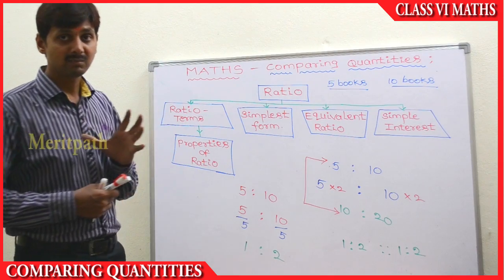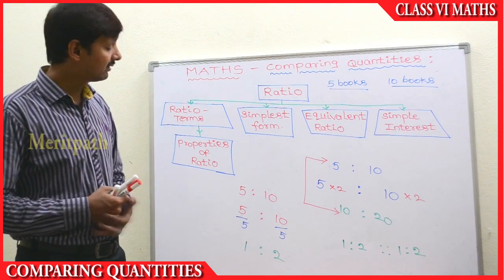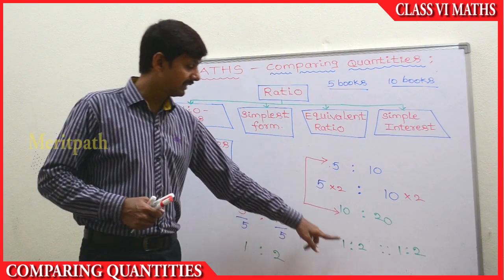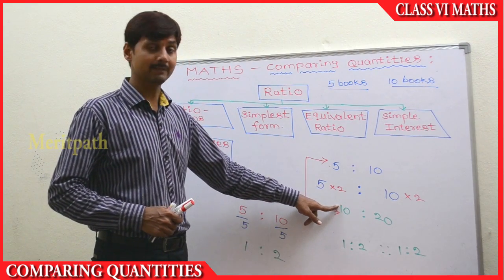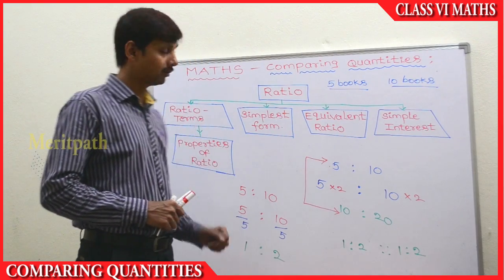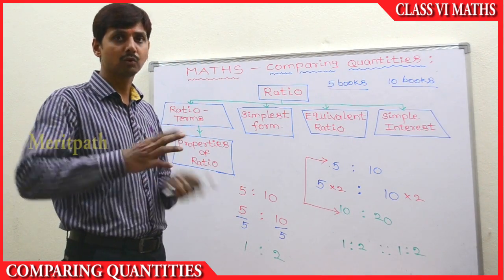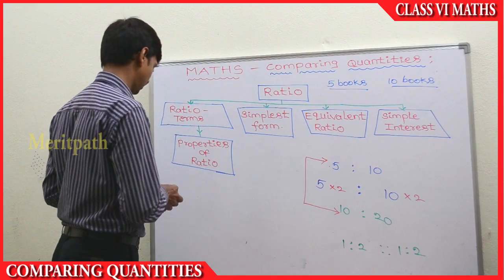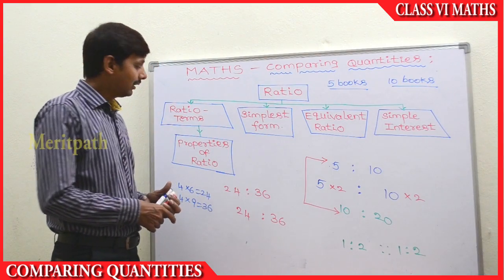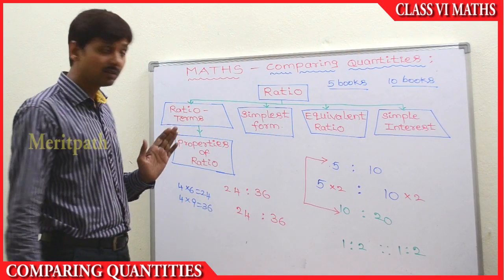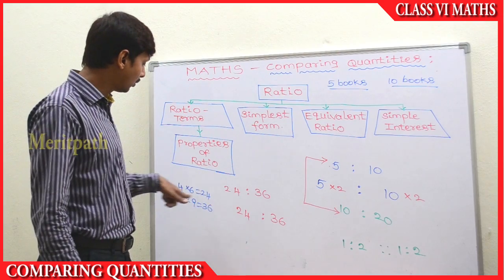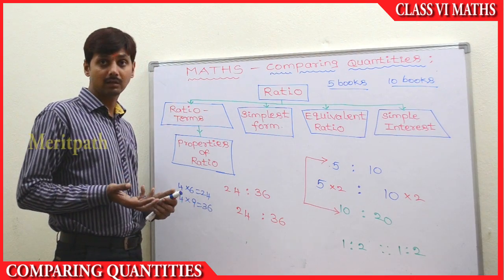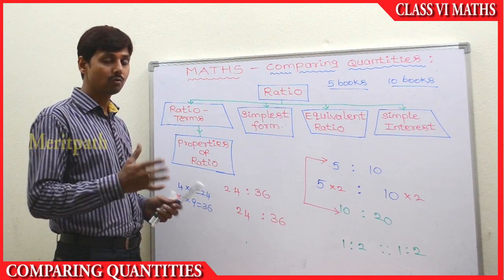The next concept is the simplest form of a ratio. We have taken five is to ten — cancel with the five table — we get one is to two. Ten is to twenty — cancel with the ten table — we get one is to two. This is the simplest form. For example, take 24 is to 36. We can see the four table on both sides: four sixes are 24 and four nines are 36. So let's divide both antecedent and consequent by four.